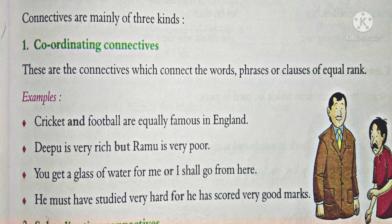You get a glass of water for me or I shall go from here. Here, 'or' is the coordinating connective. He must have studied very hard, for he has got very good marks. Here, 'for' is the coordinating connective.